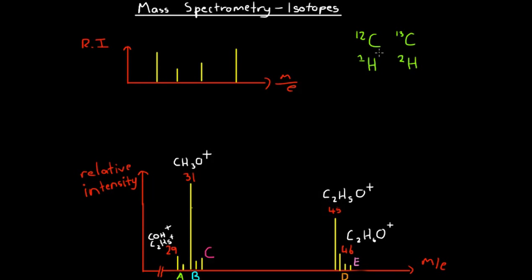When we put in a sample of our hydrocarbon, some of the molecules will contain carbon-13 and they will contain hydrogen-2. So if we've got all these peaks caused by fragments containing carbon-12 and hydrogen-1, then we're going to also have some really small peaks — very small because carbon-13 and hydrogen-2 are so rare. If we have some fragments containing carbon-13 instead of carbon-12, then we're going to have a very small peak at a slightly higher mass-on-charge ratio than the major peak.